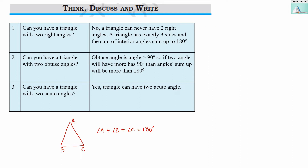Our second question: can you have a triangle with two obtuse angles? An obtuse angle is one whose measure is greater than 90 degrees. If we have two obtuse angles — for example, angle A is 91 degrees and angle B is also 91 degrees — then the addition of these two angles will already be more than 180 degrees. So that is not possible according to the angle sum property. Two obtuse angles are also not possible in a triangle.